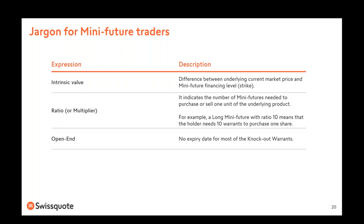Open-end simply means there is no expiry date for mini futures — the same as for knockout warrants. You can open the position when you want and close it when you want, also intraday. The position will be closed either when you decide to sell your long position or when the stop loss level is hit, in which case the issuer closes the position for you.